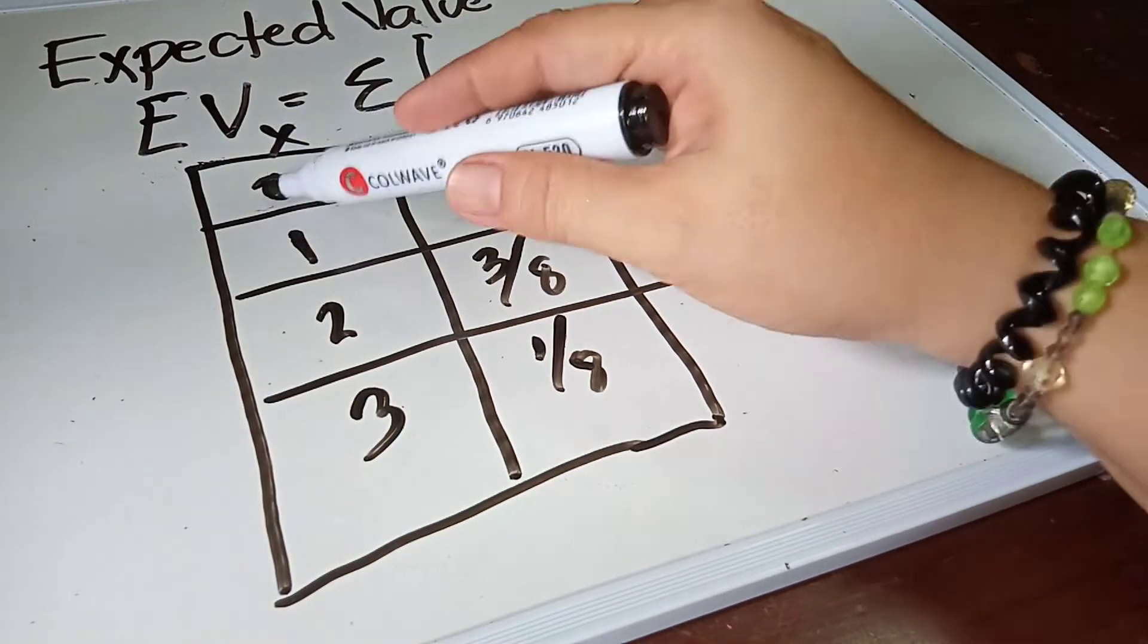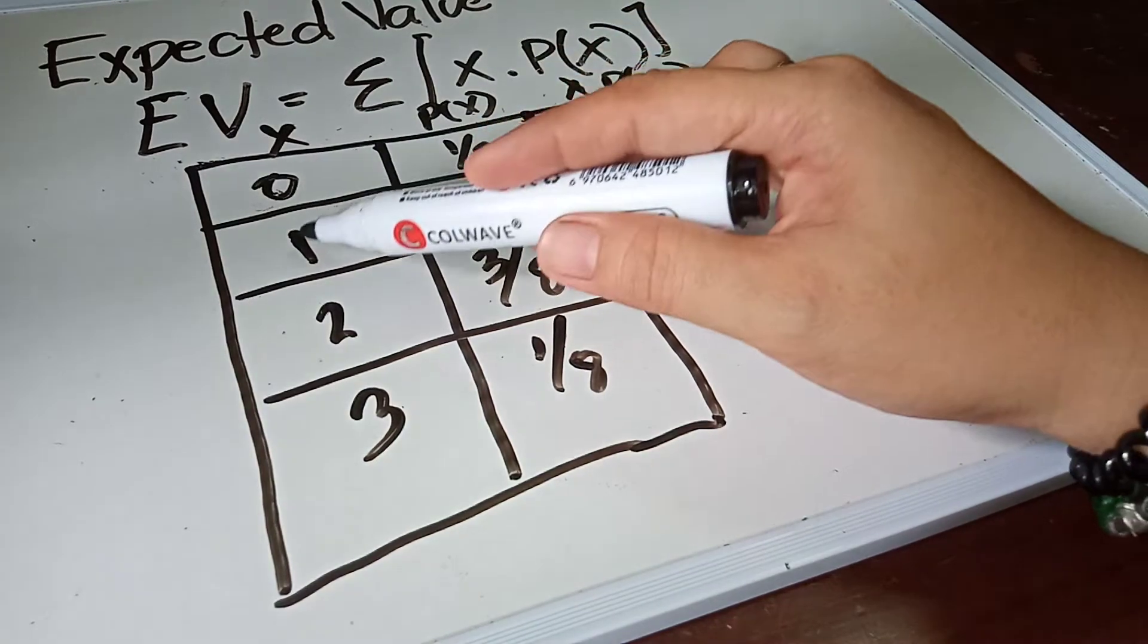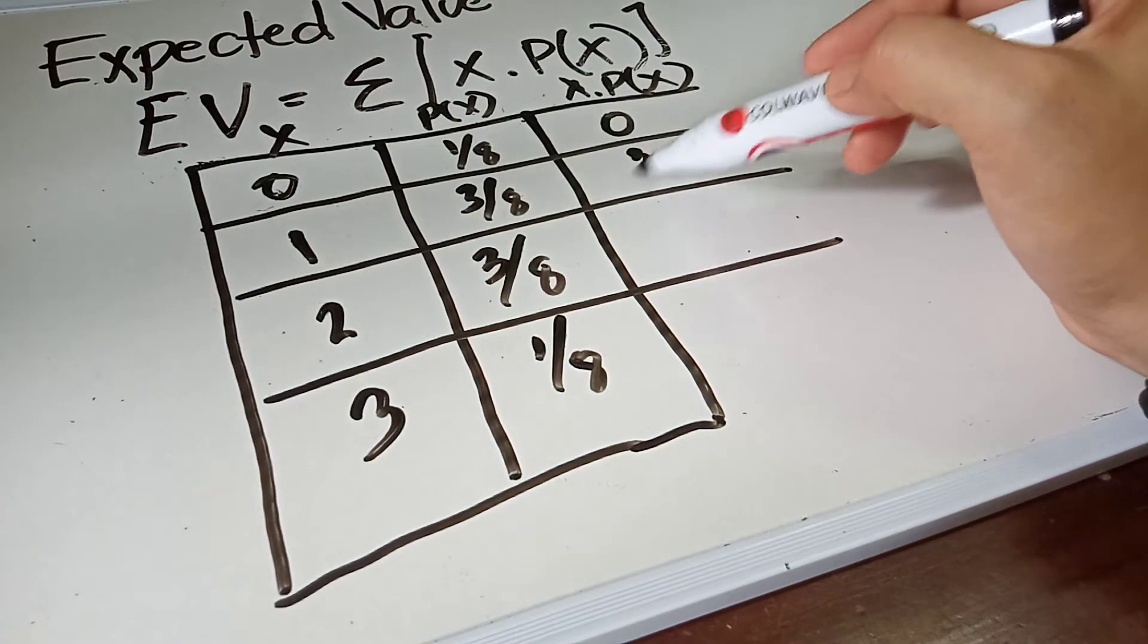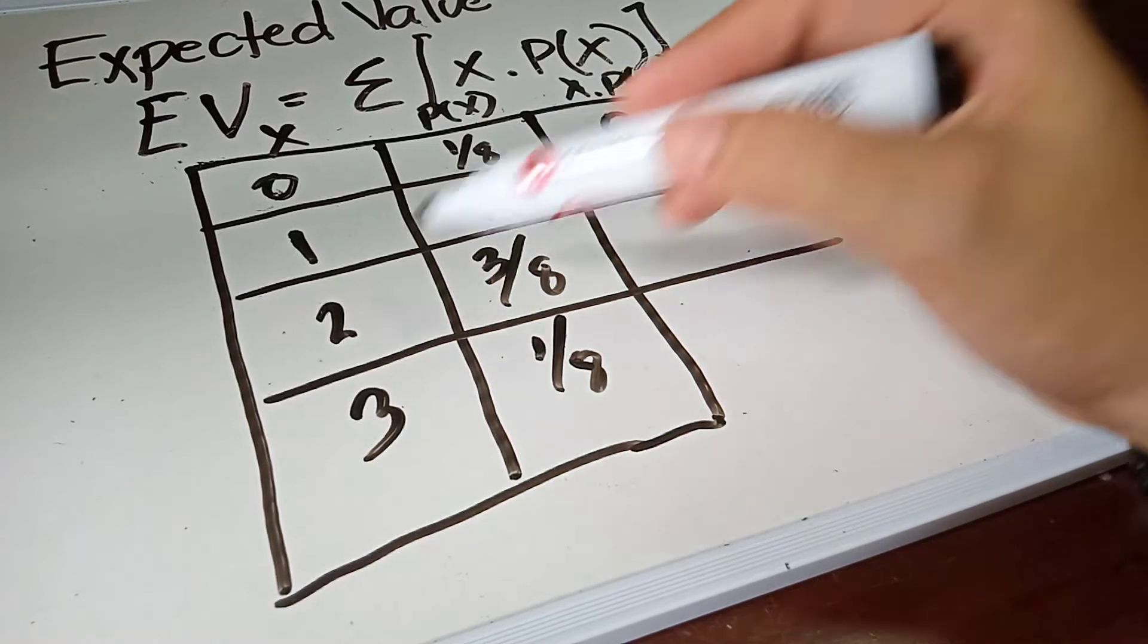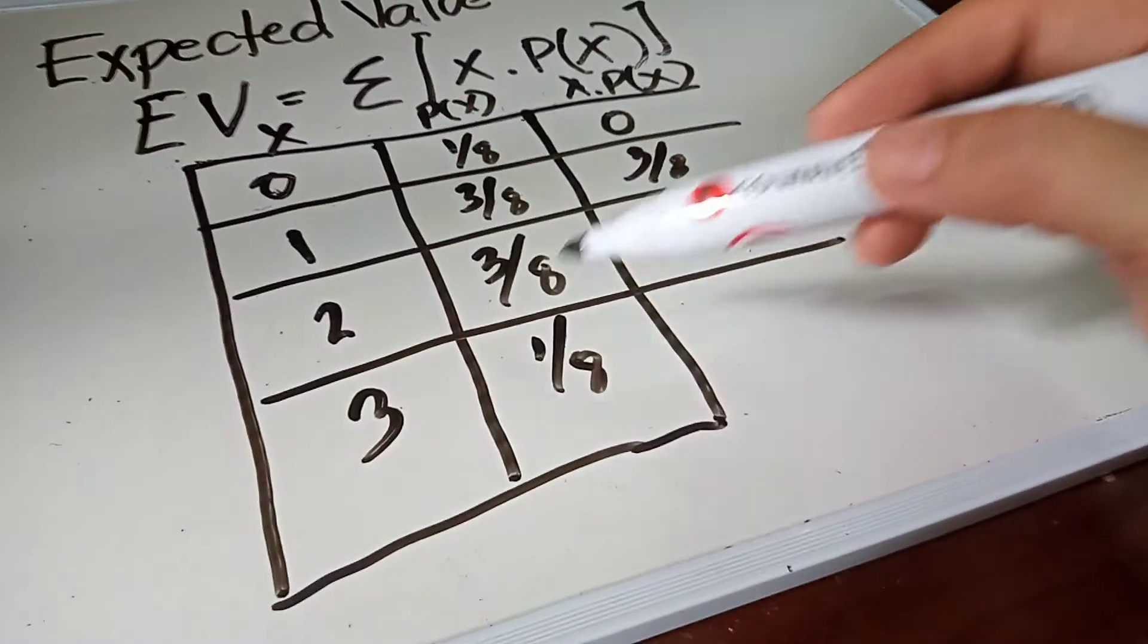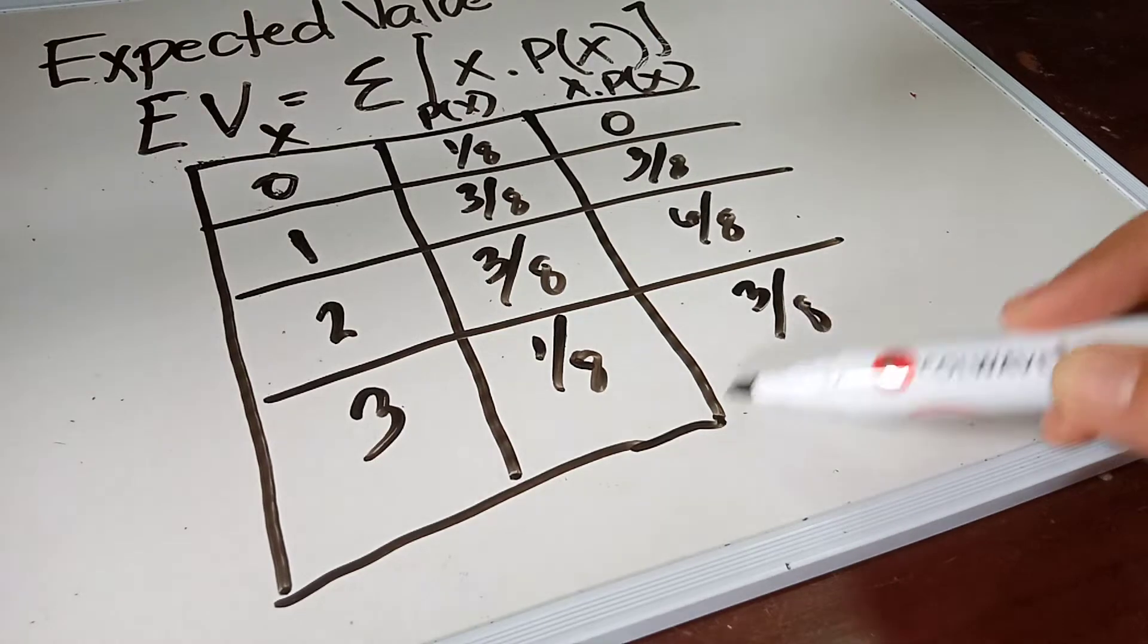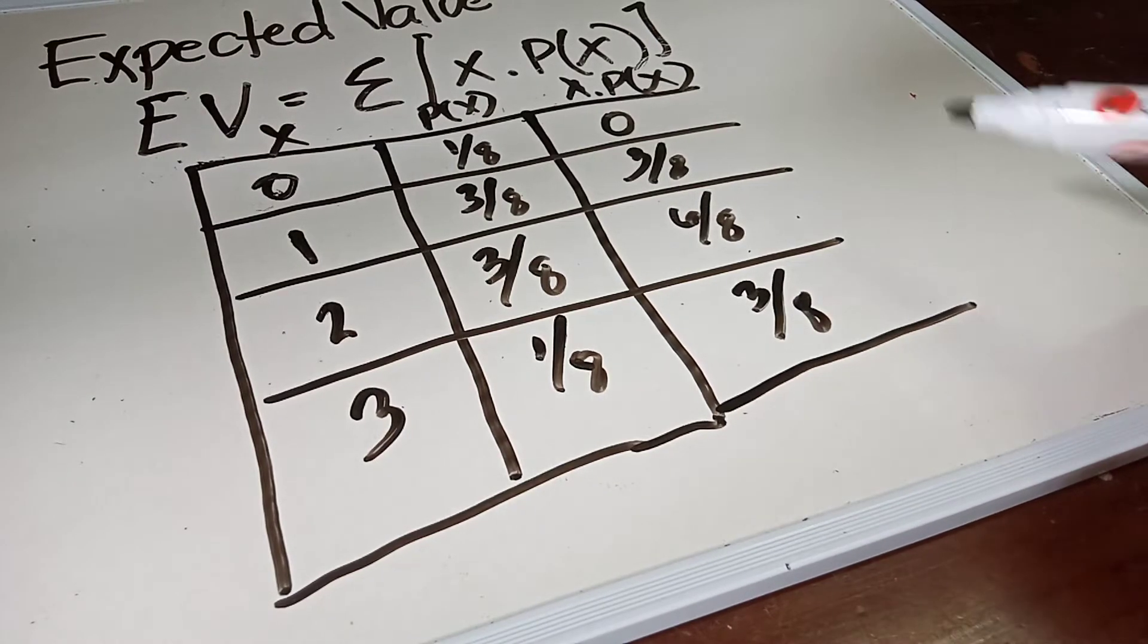So zero times one over eight will become zero. One times three, three over eight. Two times three will be six over eight, and then one times three is three over eight. So what will be the total?